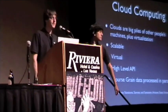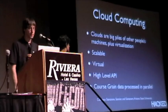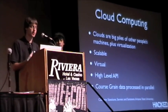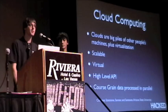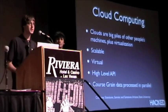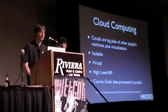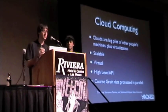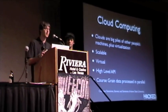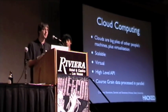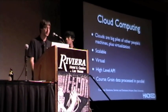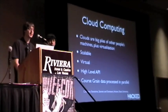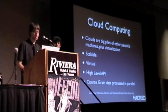A few things most people should already know about clouds: they're big piles of other people's hardware, there's some element of virtualization built into them, and they're scalable — you can drop nodes in and out and it won't affect how the cloud runs. With Hadoop we really don't have to deal with moving data around or dealing with networking. You just write a mapper or a reducer and the framework takes care of all the rest. Hadoop really utilizes core screen data processed in parallel.